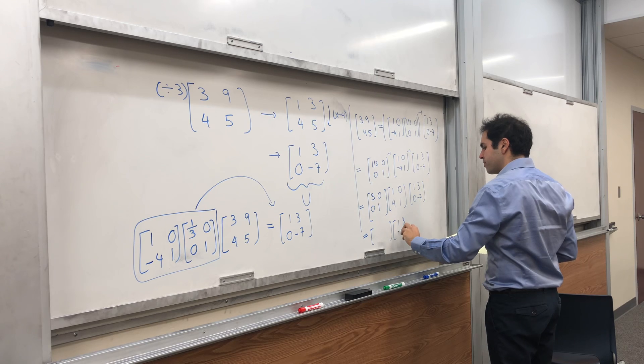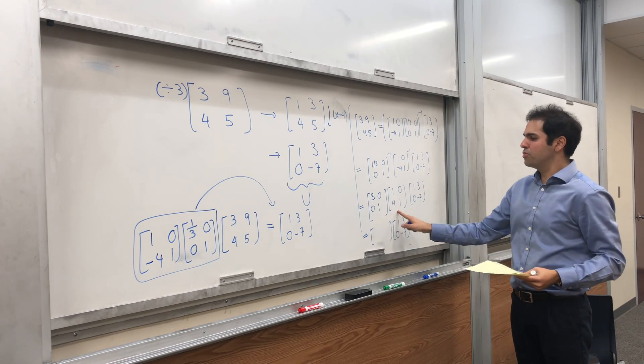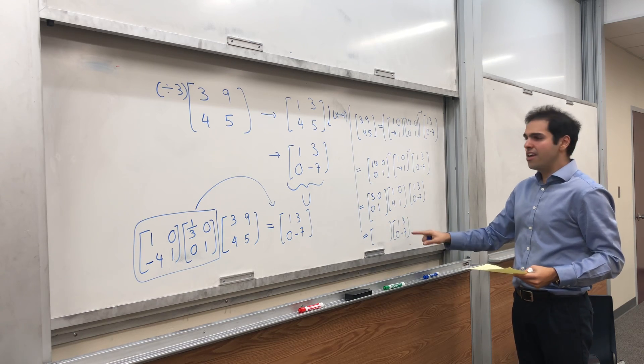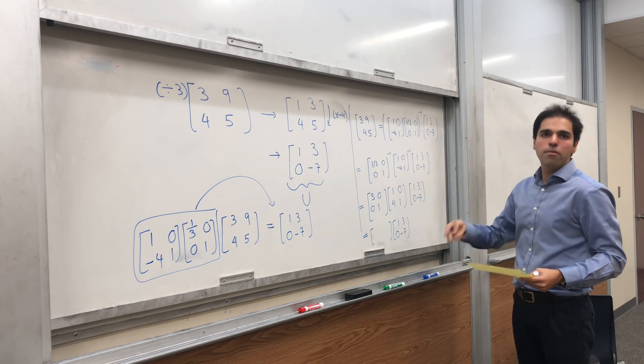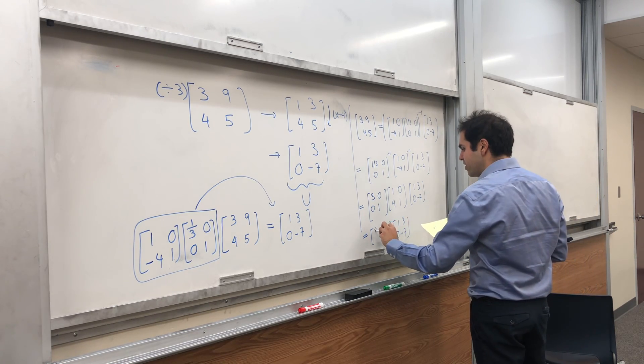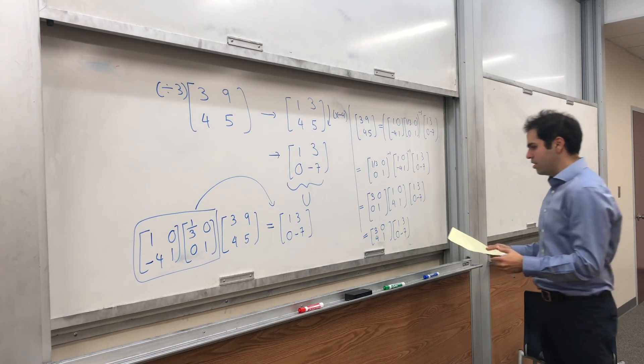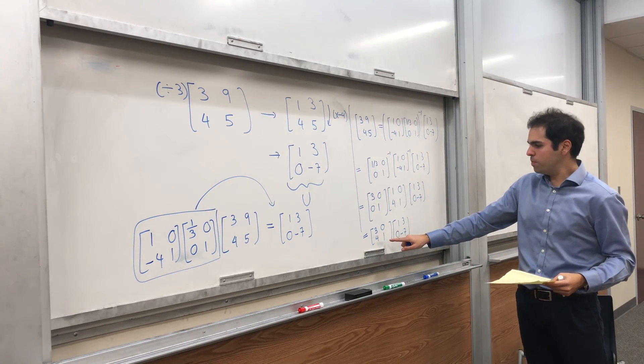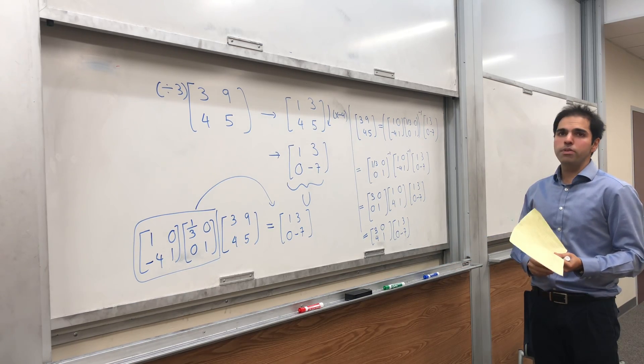And, lastly, all you need to do is just multiply those two matrices together, and basically, because each matrix is lower triangular, the product will still be lower triangular. So, we get 3, 0, 4, 1. And, you see, this becomes your L, this becomes your U, and then A will be LU.